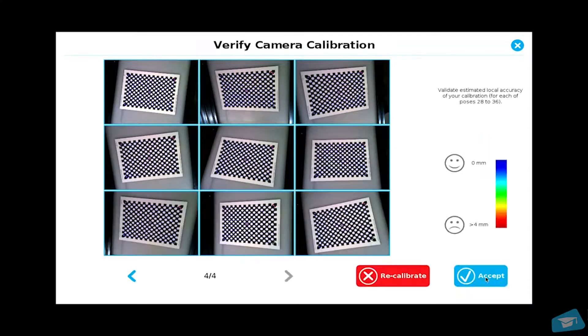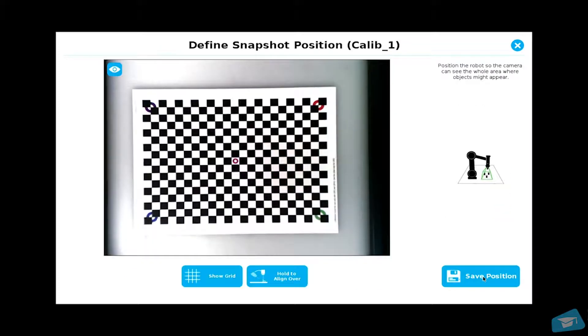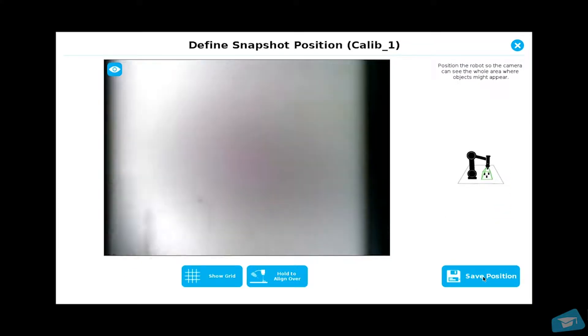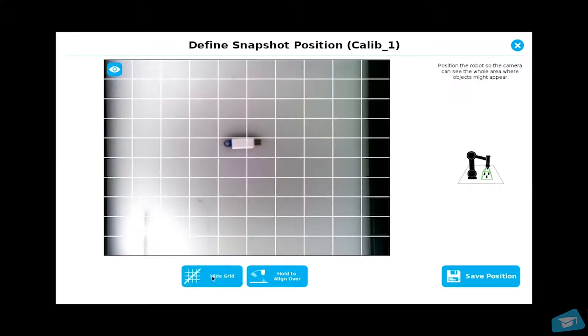Verify that the calibration is fine and click accept. Place the object under the camera and toggle the grid display. Make sure the object fills at least one square grid.